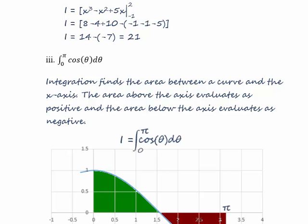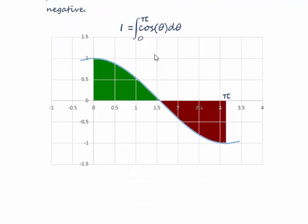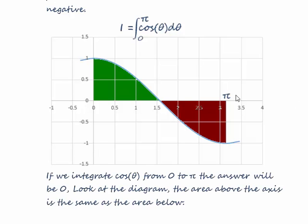The problem with this question is that the area from zero to pi over two is the same as the area from zero to pi, except the green area will be positive and the red area will be negative, meaning our answer would be zero — which is clearly not right. So instead, we integrate cos theta from zero to pi over two and then double the answer.